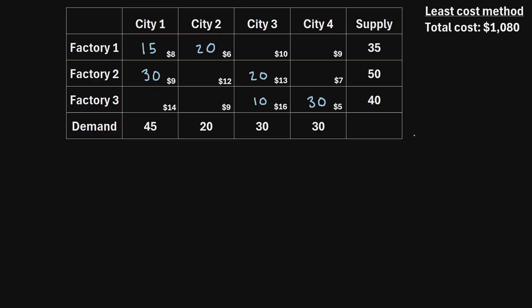When we're trying to solve a transportation problem like this, we want to fulfill the demand but minimize the shipping cost. I've written the shipping cost per unit in the bottom right-hand corner of each cell. For example, to ship one unit from factory one to city one, that has a unit shipping cost of $8.